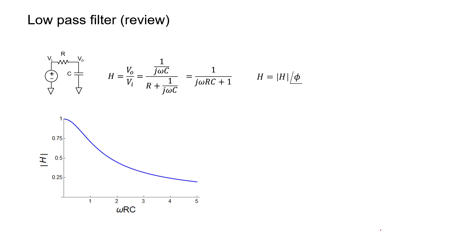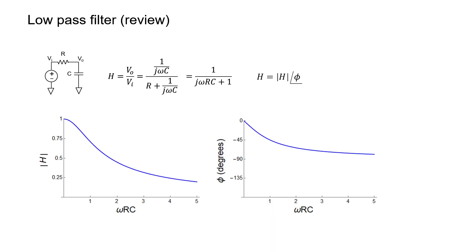But what happens to the phase? Perhaps earlier in this course, we didn't pay too much attention to the phase. But it turns out that phase can be very important for oscillators. At low frequencies, the phase shift is 0 degrees — that's what we expect in a low-pass filter. But at high frequencies, the phase approaches but never quite reaches negative 90 degrees. A capacitor in the shunt configuration can shift the phase of a signal somewhere between 0 and negative 90 degrees, non-inclusive.